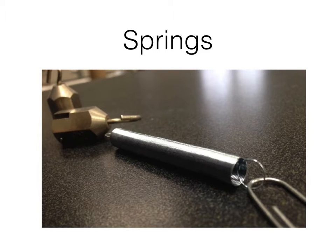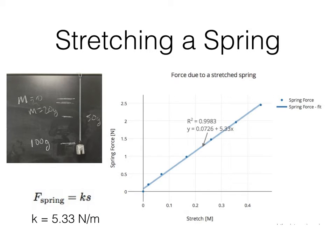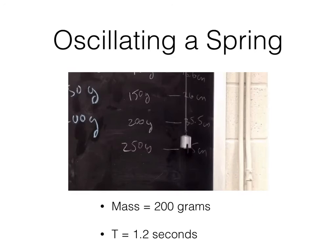That's a spring — it's a picture of a spring, just in case you couldn't tell. This is something you're going to do in lab. As you stretch the spring, you can get the spring constant. The force is proportional to some constant times the stretch, k times s. For this particular spring, I found k is 5.3, but your spring is going to be different.